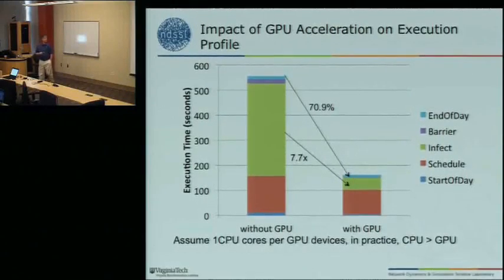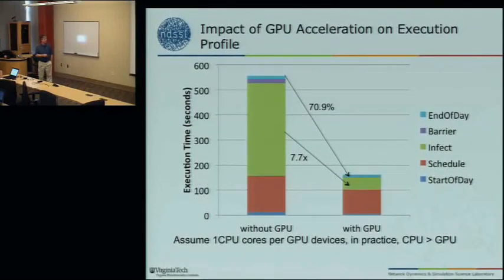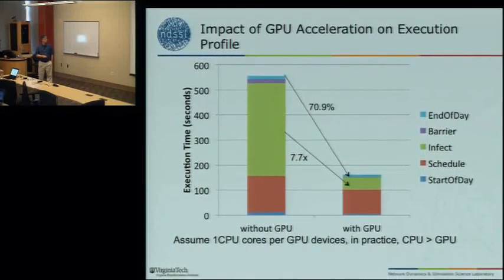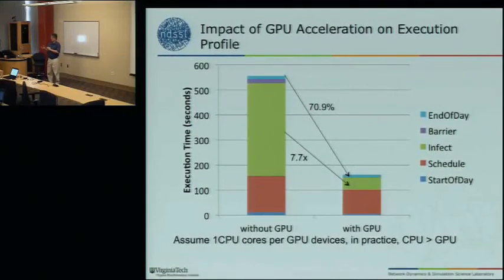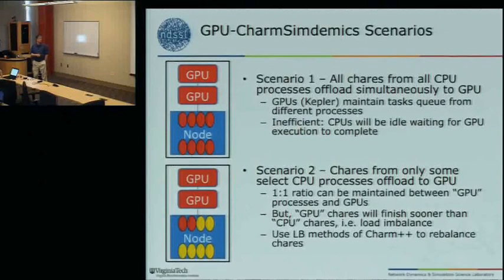We've also used GPUs to try to accelerate EpiSimdemics. This was done on HokieSpeed at Virginia Tech, not Blue Waters. The location computation is the biggest chunk, so that's the part we tried to move onto the GPU. We get quite a bit of speedup — basically a seven to almost eight-fold improvement. This is comparing one CPU process doing that same amount of work versus doing it on a GPU.